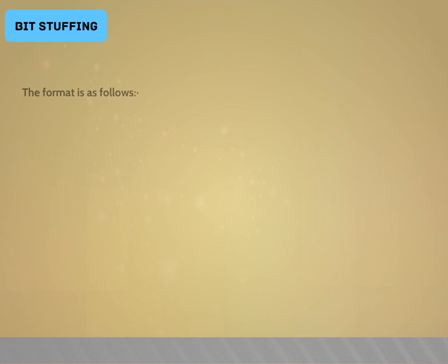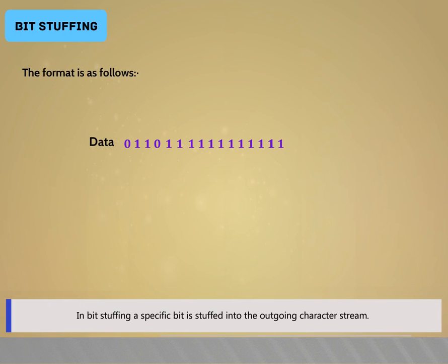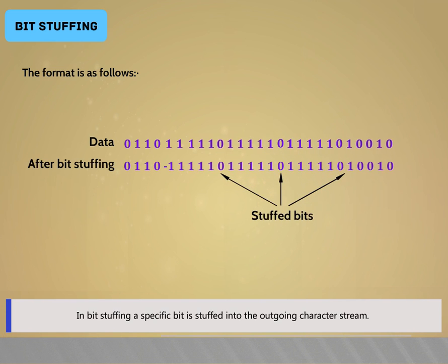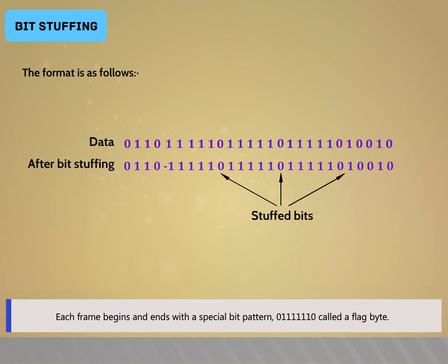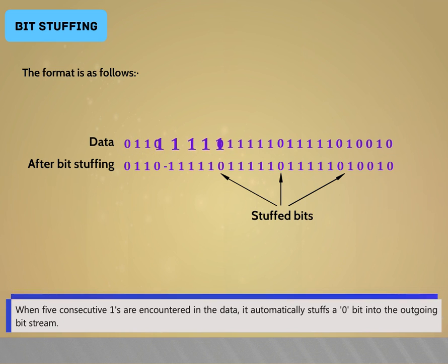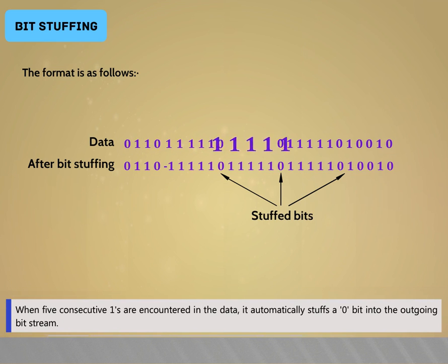Bit stuffing. In bit stuffing, a specific bit is stuffed into the outgoing character string. Each frame begins and ends with a special bit pattern 01111110, called a flag byte. When five consecutive ones are encountered in the data, it automatically stuffs a 0 bit into the outgoing bit stream.